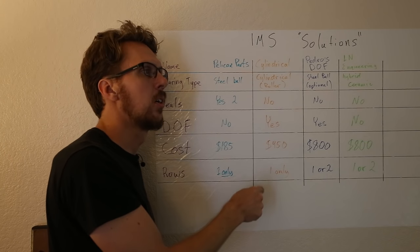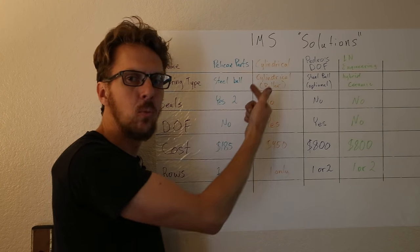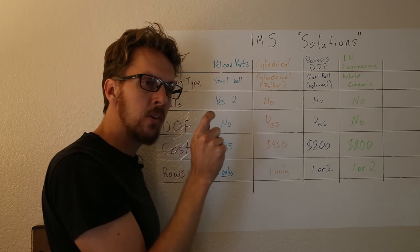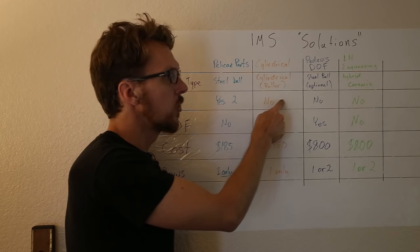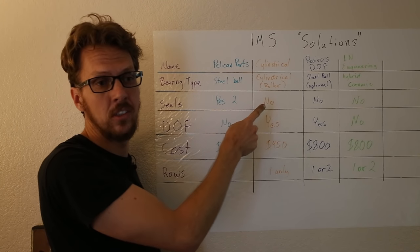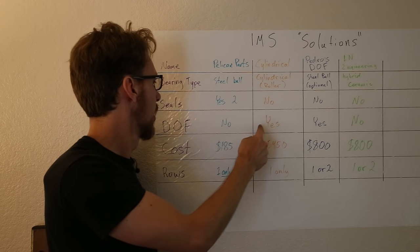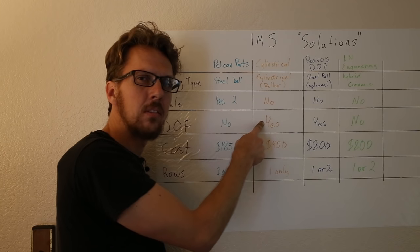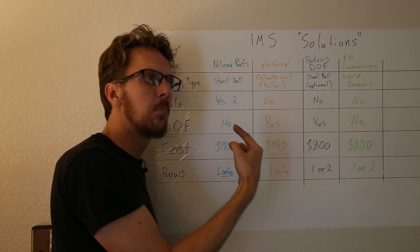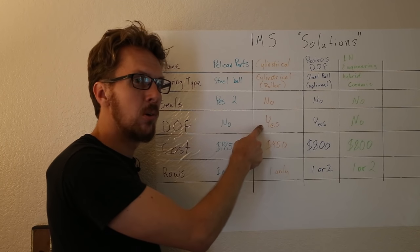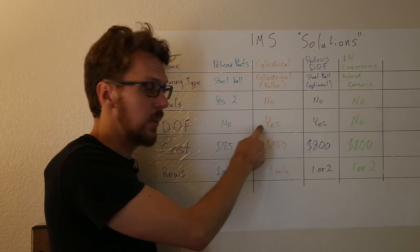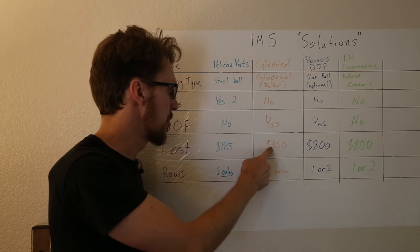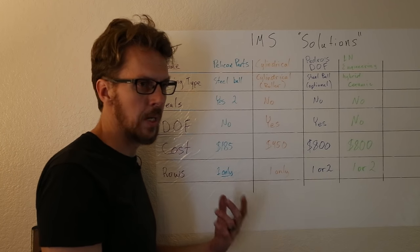Second one, cylindrical IMS solution. It's a cylindrical roller bearing. So bearing type, cylindrical, it's not balls, they're little cylinders. Seals? No. Cylindrical bearings can't have seals because there's no way to really properly internally lubricate them. Direct oil feed? Yes, it has to have a direct oil feed. However, you have to modify the oil pump, which could possibly weaken it, so not a great oil feed system. Cost? $450. Quite a substantial increase from the Pelican kit. And number of rows, one, because roller bearings always have just one row.